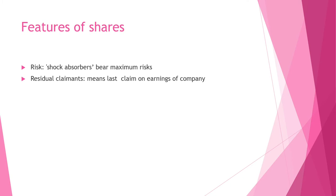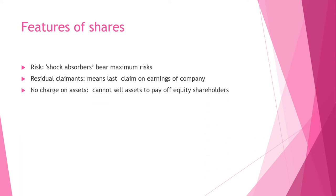Residual Claimants — when the company earns profits, equity shareholders are the last to claim. The company pays off all its direct and indirect expenses and reserves, and the balance amount left is given to these shareholders. There is no charge on the assets — if equity shareholders are to be repaid when the company is wound up, the company cannot sell off its assets to pay them, as there is no charge on assets against equity shareholders.